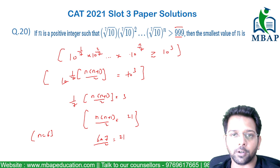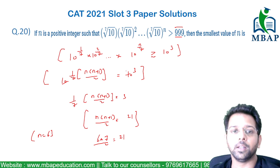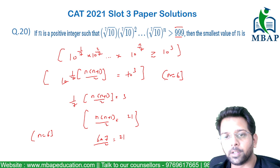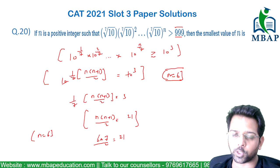Now we have gone only till the value of 10 raised to 6/7. So 6, the value of n which we are getting here, is the smallest value of n which could satisfy this.